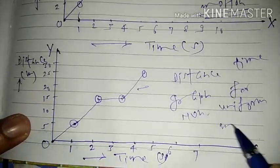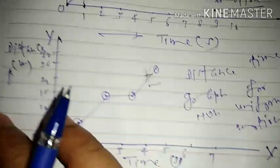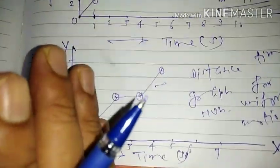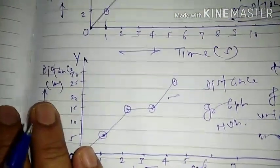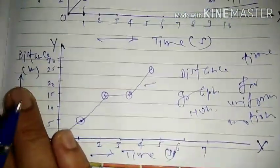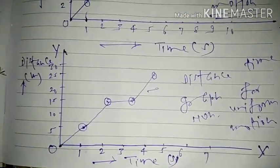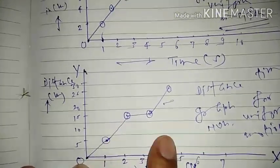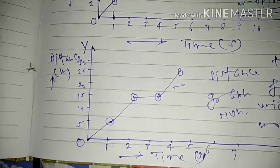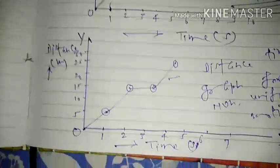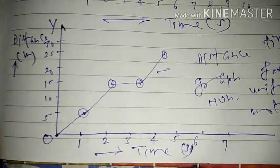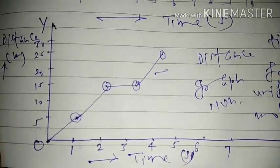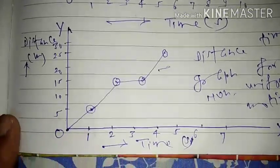It is said to be non-uniform motion. The definition of non-uniform motion is that if any object does not travel equal distance in equal time intervals, then it is said to be non-uniform motion. So one by one we shall explain each and every physical term geometrically.